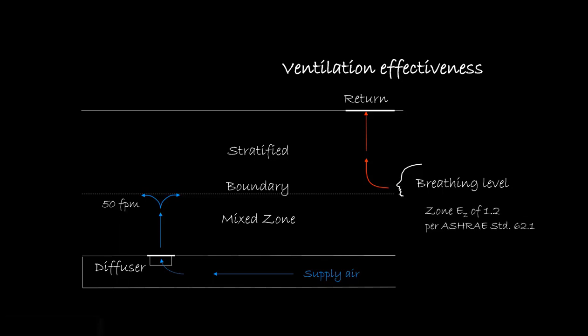ASHRAE Standard 62.1 recognizes this enhanced contaminant removal by awarding a ventilation effectiveness factor of 1.2 to UFAD systems whose projection to 50 feet per minute does not exceed 4.5 feet. The same is awarded to thermal displacement ventilation systems. Projection beyond this level captures contaminants within the occupied zone and thus is assigned an effectiveness factor of 1.0, that which is also awarded to overhead cooling systems.